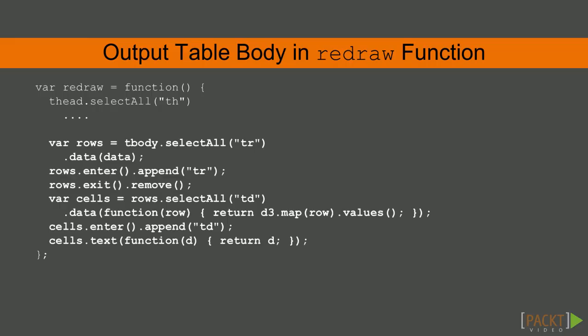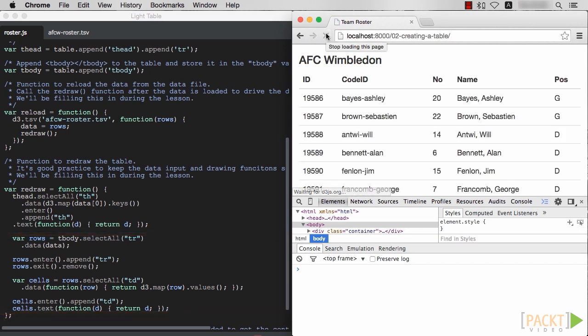For the body of the table, we select the virtual TR elements, assigning the entire data array as the data. Enter will then append TR elements as many times as we have records in the data. We would also like to handle the removal of rows in the table's body. Each TR row then has its TD cell elements selected and appended on Enter. The standard text setting function is then applied to all cells. Save that and reload the page — and we have replicated our table in HTML! Nice job!